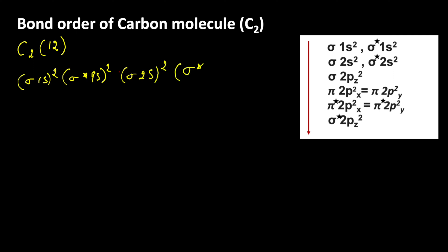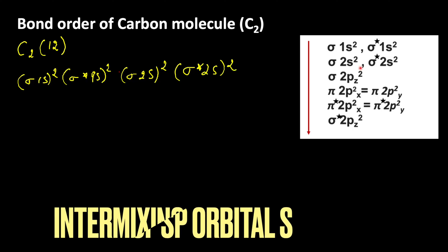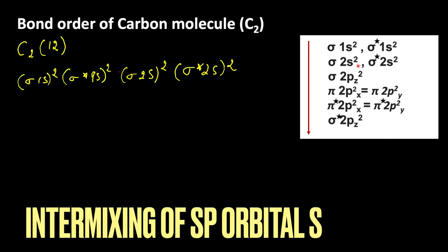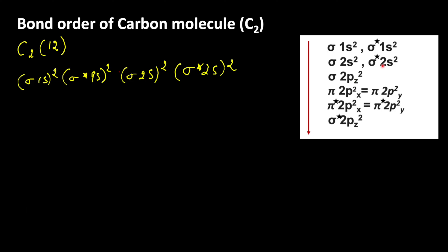then sigma star 2s². In case of boron, carbon and nitrogen, there is the possibility of intermixing of 2s and 2p orbital. This is because the energy difference between 2s and 2p orbital is very low.